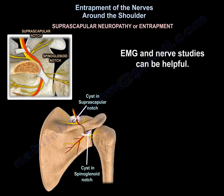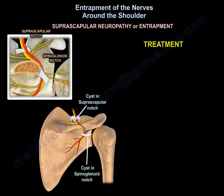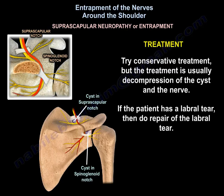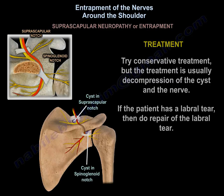EMG and nerve conduction studies can be helpful. You can try conservative treatment, but the treatment is usually decompression of the cyst and the nerve. If the patient has a labral tear, then repair of the labral tear is also performed.